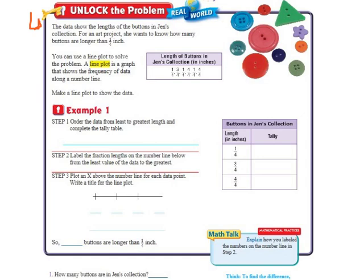The data shows the length of the buttons in Jen's collection. For an art project, she wants to know how many buttons are longer than 1/4 of an inch. You can use a Line Plot to solve the problem. A Line Plot is a graph that shows the frequency of data along a number line. Make a Line Plot to show the data.